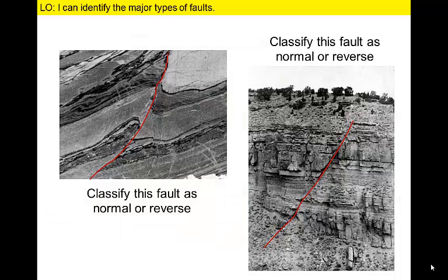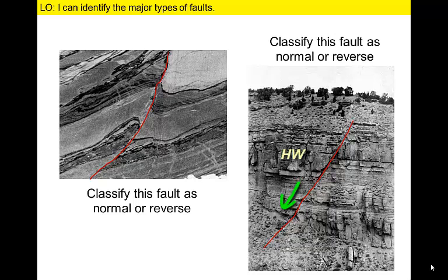Here are two more images of faults. Can you identify them as normal or reverse on the basis of the information provided? In the left-hand image, the hanging wall is to the left of the fault and those layers have moved up relative to the ones on the right — therefore, this is a reverse fault. In the right-hand image, the hanging wall is again above the fault; however, the layers have moved down relative to the block on the right, so this must be a normal fault.